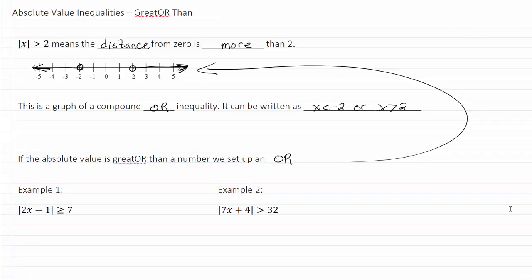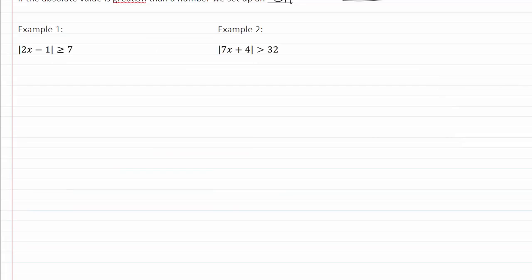Let's take a look at our examples. So in example one, we have the absolute value of 2x minus 1 is greater than or equal to 7. Just like we were doing the absolute value equations before, we're going to set up two equations.